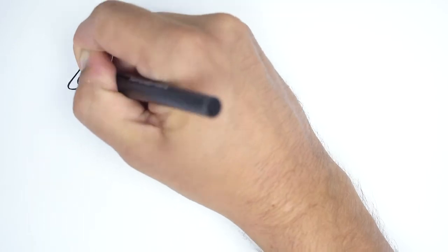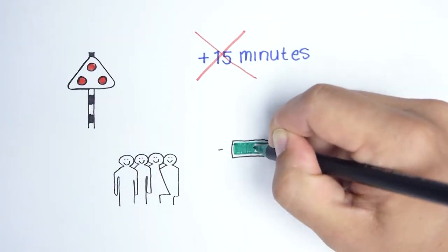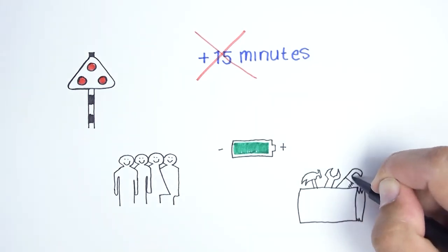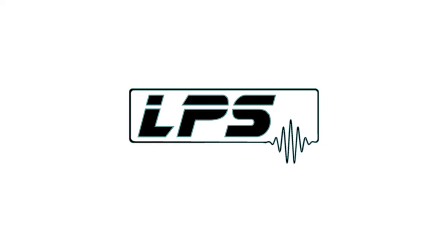So, trains become faster, more punctual, which increases capacity while increasing energy efficiency and decreasing maintenance by using the LPS tribometer.